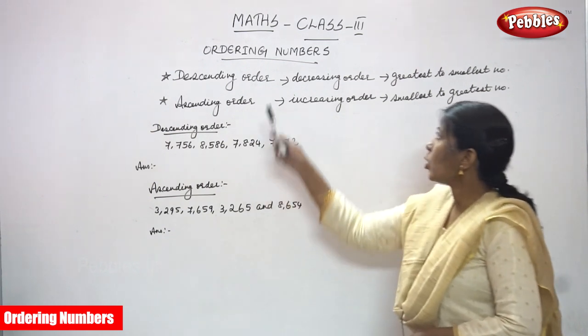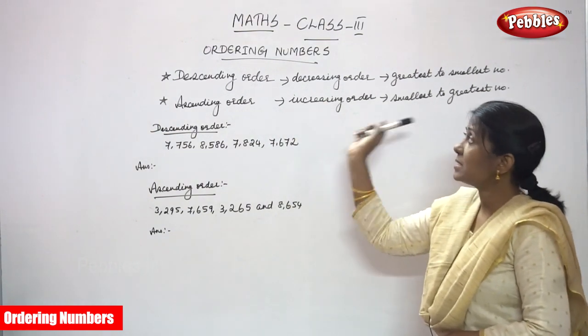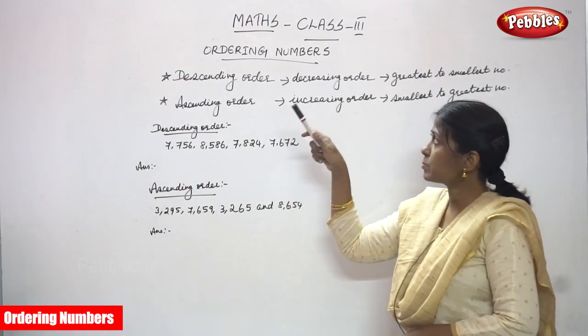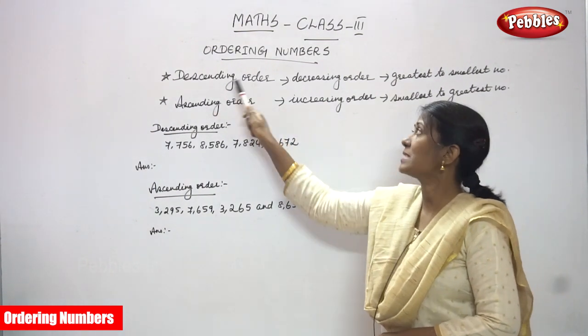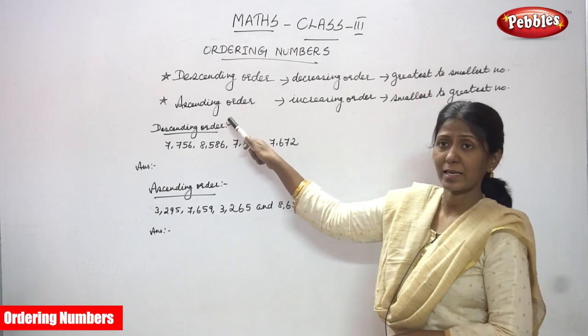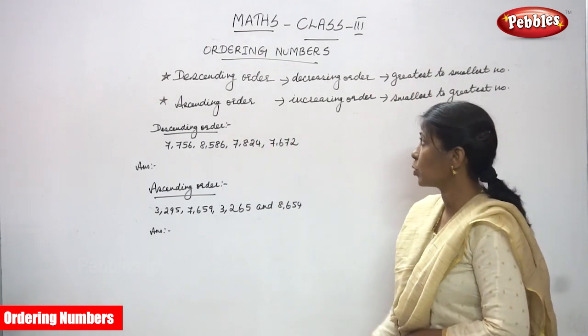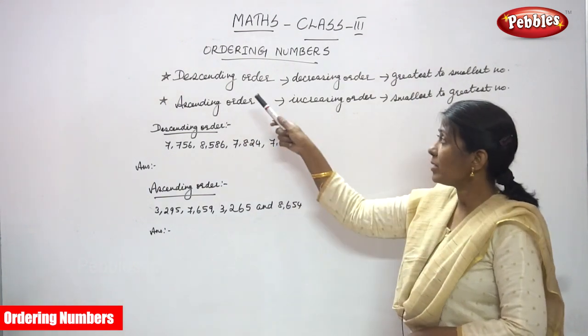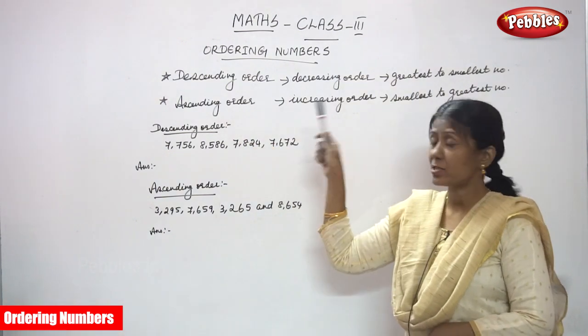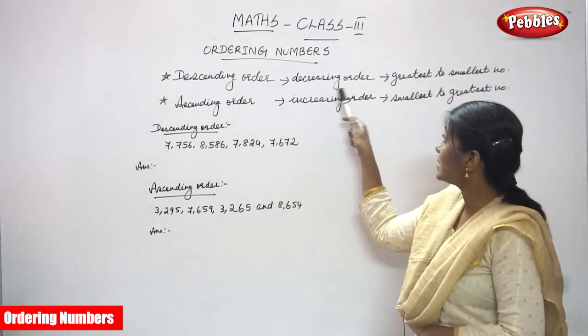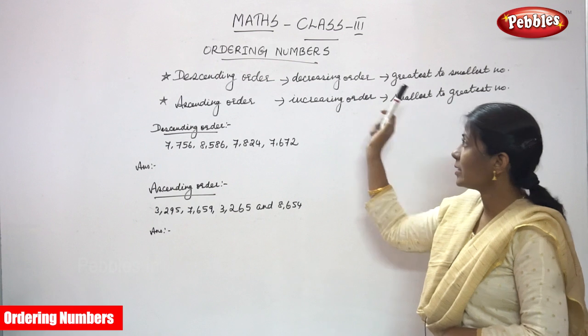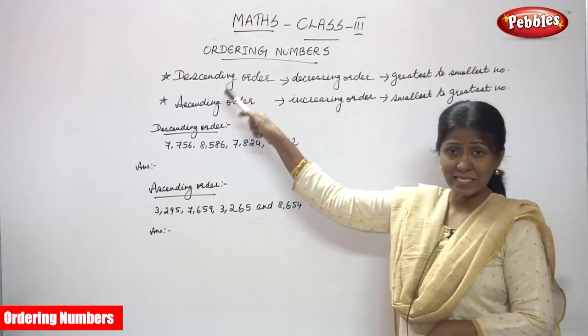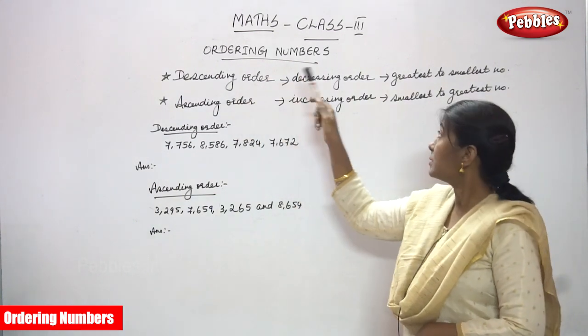Now we are going to see ordering numbers. There are two types of orders: one is descending order and another one is ascending order. When we arrange numbers in decreasing order, it is called descending order.